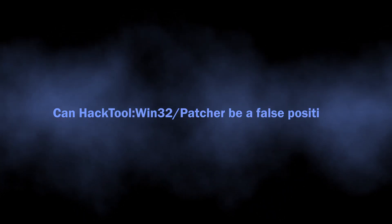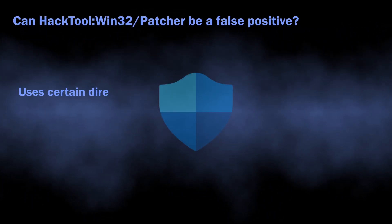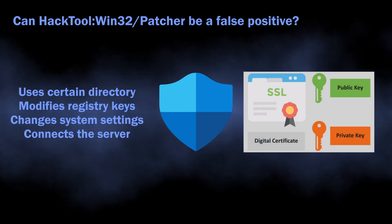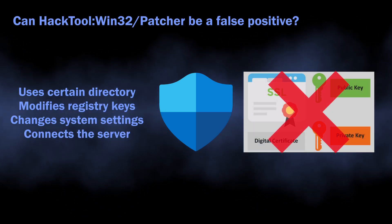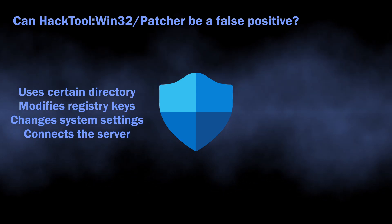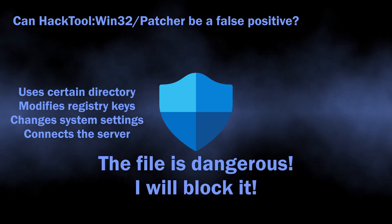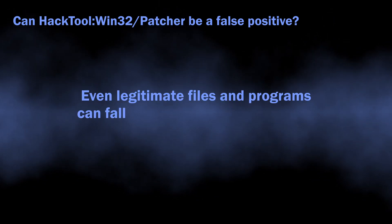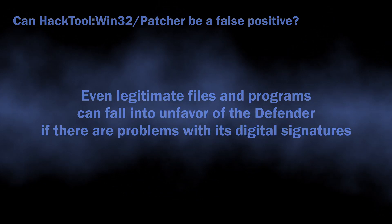There is also a possibility of this detection being a false positive. The rules used for this detection are not highly reliable. If Defender cannot find the digital certificate of the file, or it is expired, it can flag the file as dangerous, since a lot of functions and calls that normal programs use also appear in malware. The certificate is the only way to distinguish between good and bad.